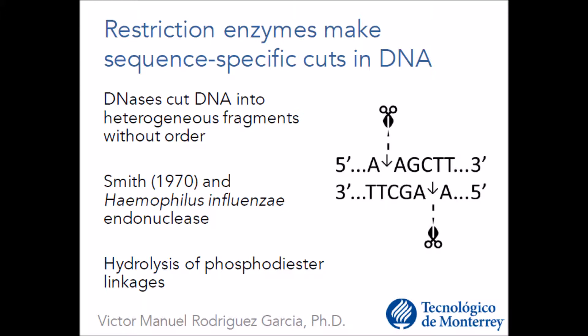Arber proposed that bacterial cells, in this case E. coli, were able to protect themselves against foreign DNA through some sort of enzymatically catalyzed genetic defense mechanism.